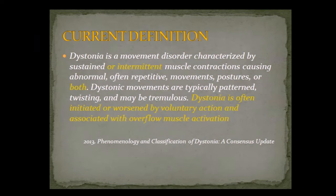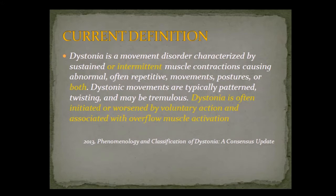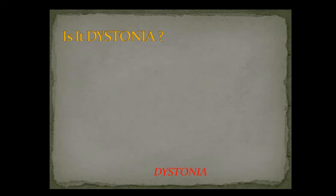A consensus meeting in 2013 came up with a better definition. Now dystonia is defined as a movement disorder characterized by sustained or intermittent muscle contractions causing abnormal, often repetitive movements, postures, or both. Dystonic movements are typically patterned, twisting, and may be tremulous. Dystonia is often initiated or worsened by voluntary action and associated with overflow muscle activation. These were cardinal features initially missing. The only additional movement that can happen with dystonia is some tremors — for anything else, think of a different diagnosis.